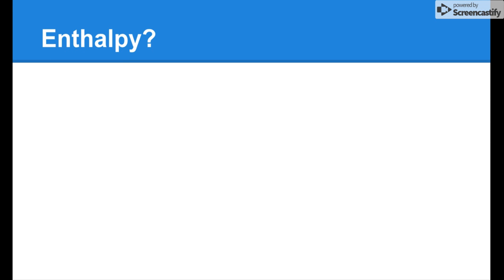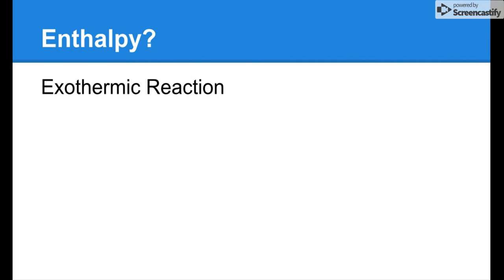You're going to be telling the sign — whether it's positive or negative. The first question is: what is the enthalpy of an exothermic reaction? Pause the video. All right, so this is how this works — we'll use this one as a practice. The sign of enthalpy is delta H. For exothermic reactions, it's negative delta H.